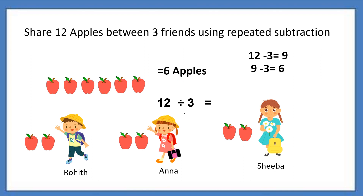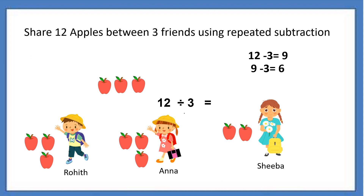Now again we will repeat the same process. Out of 6 apples, the first apple goes to Rohit, the next second apple goes to Anna, and the third apple goes to Sheba. So now, how many apples? 3 apples are here. That means out of 6 apples, 3 apples we gave to 3 friends — Rohit, Anna, and Sheba. 6 minus 3 is 3.